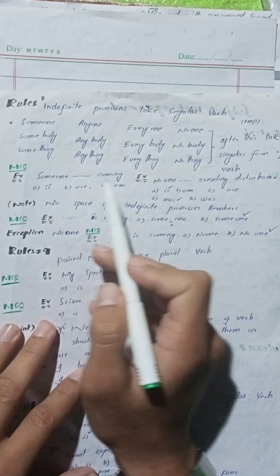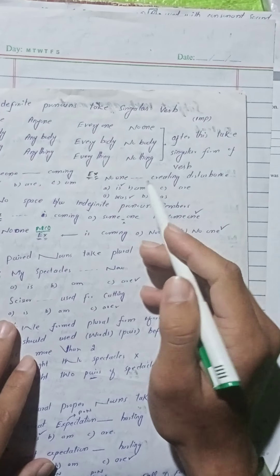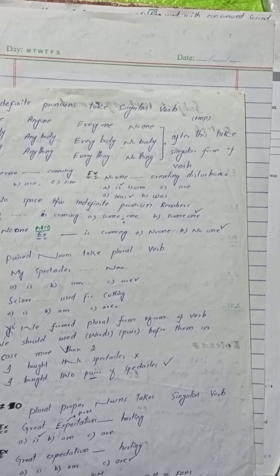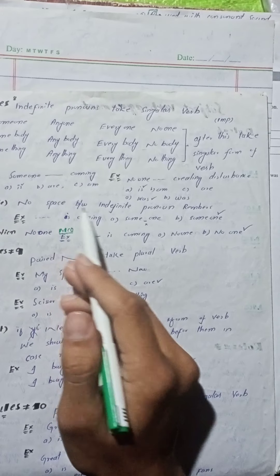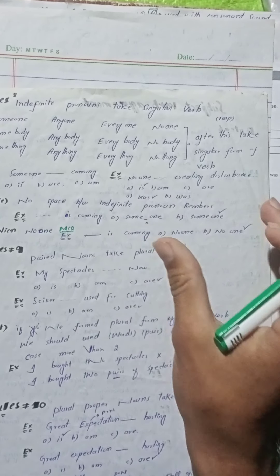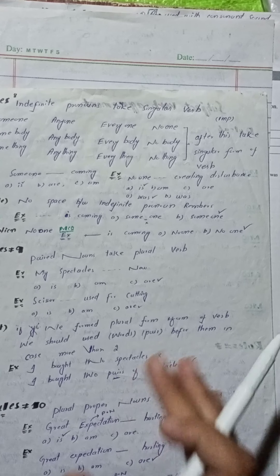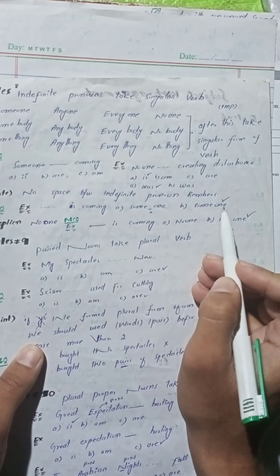MCQ two: 'No one ___ creating disturbance.' یہاں 'no one' indefinite pronoun ہے، تو singular verb 'is' آئے گی۔ Right option: 'is'. ایک بہت important note: indefinite pronouns — someone, anyone, everybody, everything وغیرہ — کے درمیان space use نہیں کرنا۔ MCQ میں اگر 'some one' (space کے ساتھ) آئے تو وہ wrong ہوگا۔ جس میں space نہ ہو وہ right option ہوگا۔